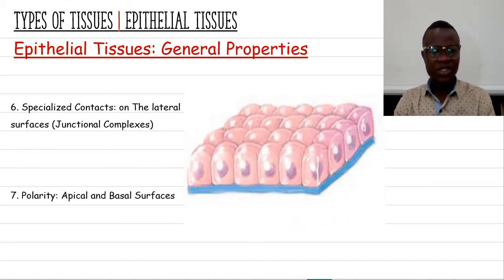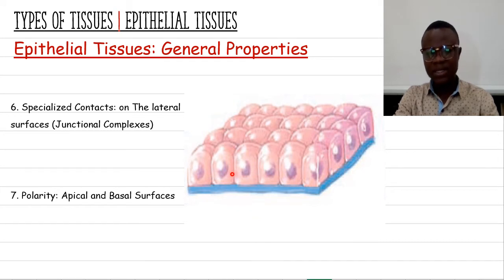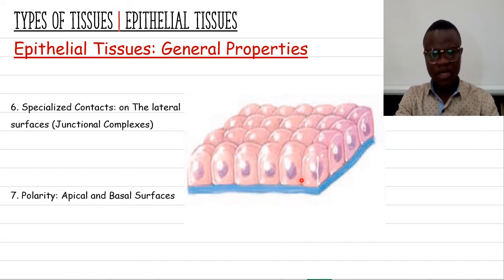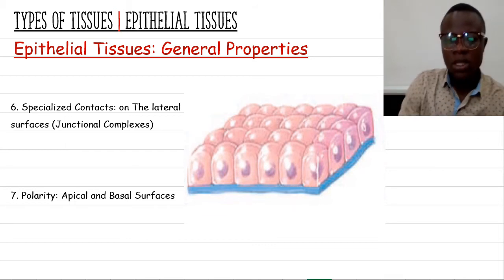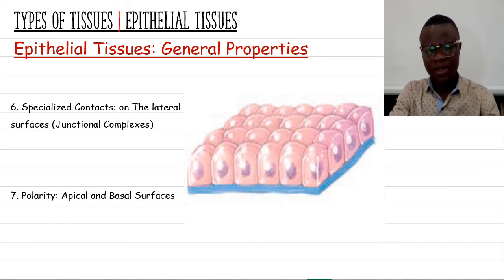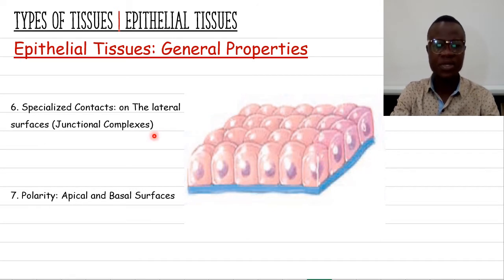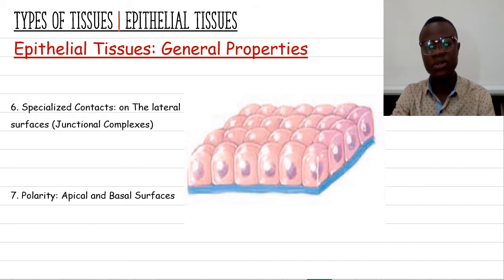Epithelial tissue also has specialized contacts. The cells that form the epithelial tissue have a common boundary with each other, meaning there are specific interactions that hold them together. Without these, the cells would fall apart — a condition that occurs in some diseases. Between these cells there are protein complexes known as junctional complexes, which we will discuss in a subsequent tutorial.